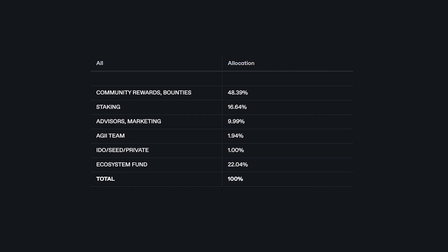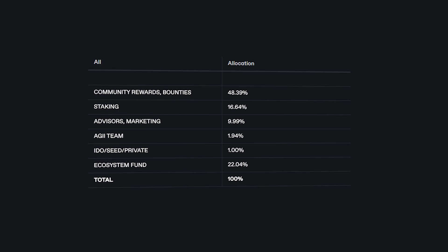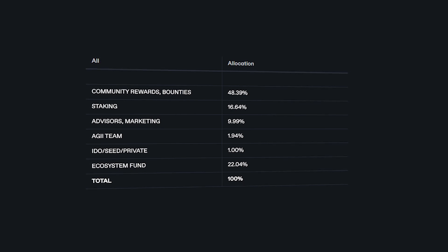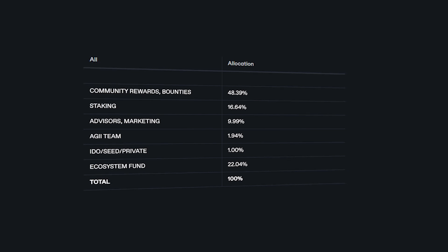The total supply of tokens is 5 billion coins. Of these, 48.39% are allocated for community rewards and bounties, 16% are allocated for staking, 10% for advisors and marketing. The team keeps almost 2% of the tokens for itself, and 1% is allocated for IDO, seed round and private sale. 22.04% will be the ecosystem fund. AGII offers flexible pricing plans including prepaid, subscription, lifetime and free trial, allowing users to explore AGII's capabilities and choose the plan that best suits their needs.